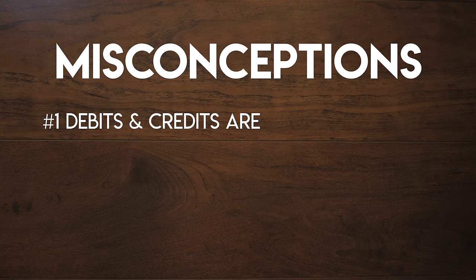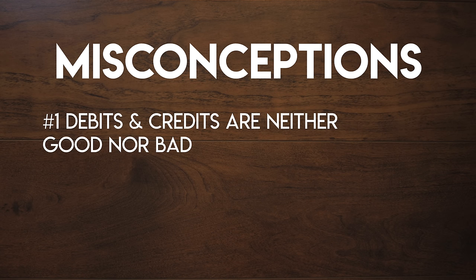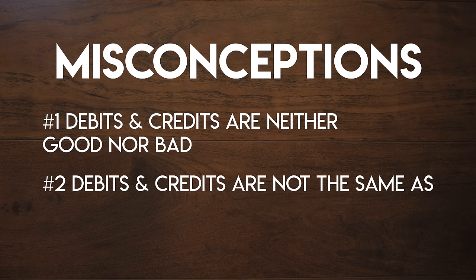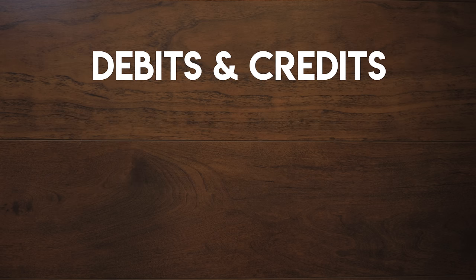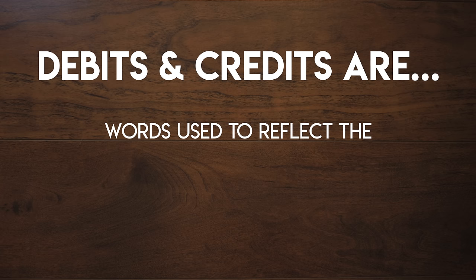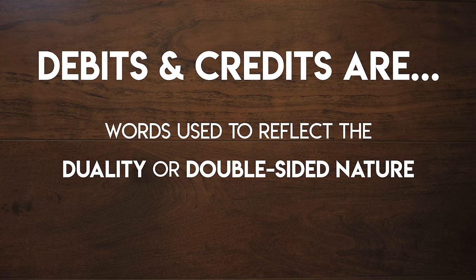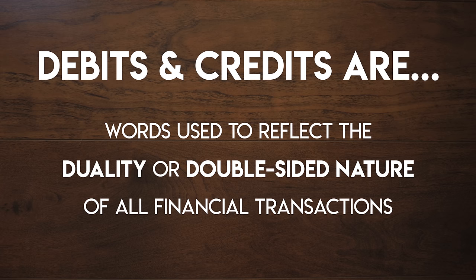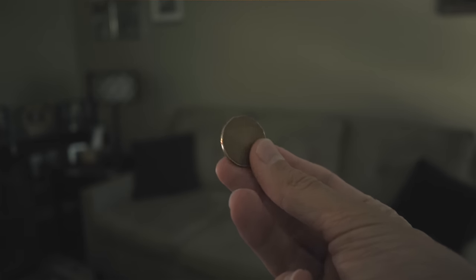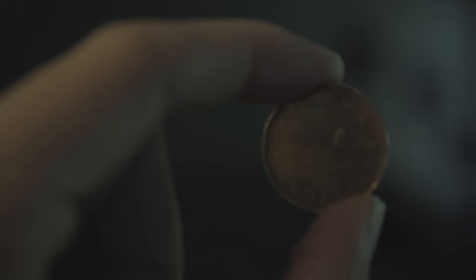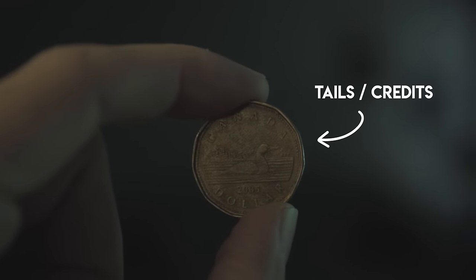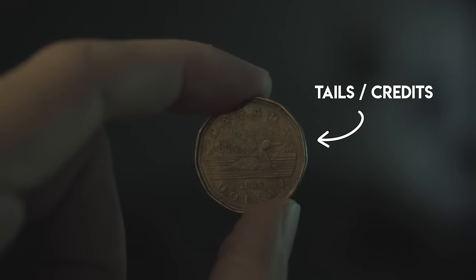Debits and credits are neither good nor bad. Debits and credits are not the same as adding or subtracting. Debits and credits are words used to reflect the duality or double-sided nature of all financial transactions. If you need an analogy to help you visualize this, you can think of debits and credits as heads and tails on a coin, since there are equal and opposite sides to every transaction.